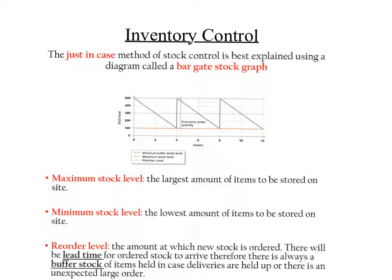The bar gate stock graph looks like this, but we'll look at this in much more depth. There are three key elements you need to look at. First of all, you need to know the maximum stock level. If we have a look at this one, we can see the maximum stock level is via this green color, which is, if we look at the stock level, it's 500.